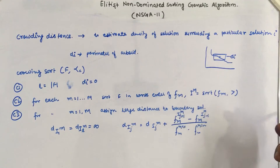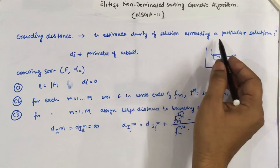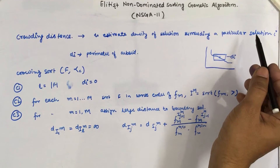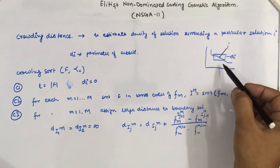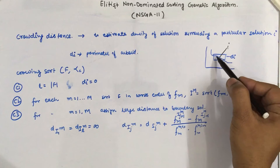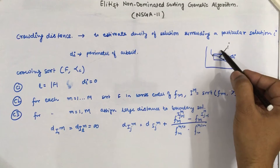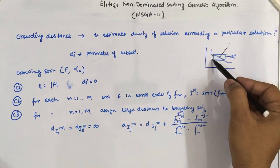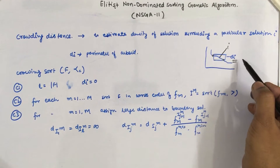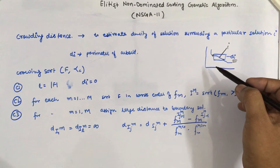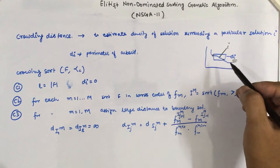To estimate the density of solutions surrounding a particular solution i is known as the crowding distance. For example, if we have a solution i, then the cuboid which is formed by the nearby solutions of solution i — the perimeter of this cuboid is known as the crowding distance for solution i.